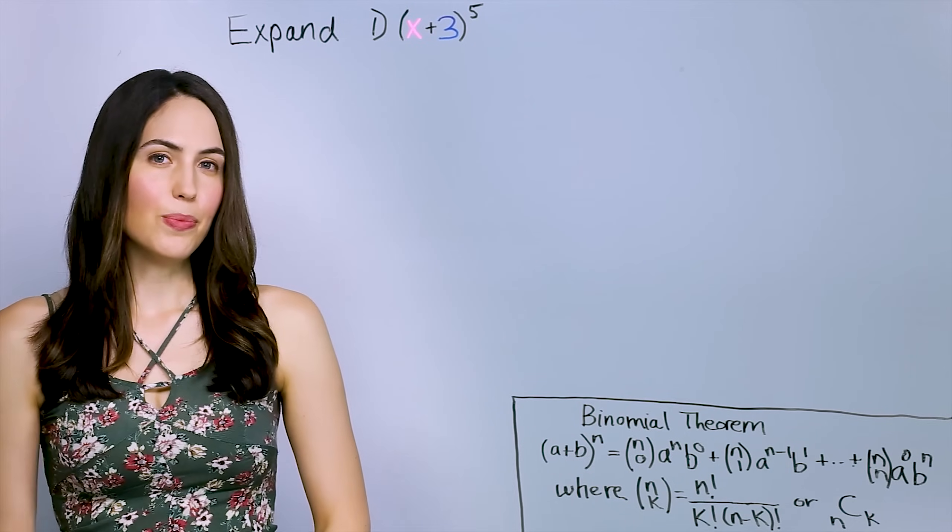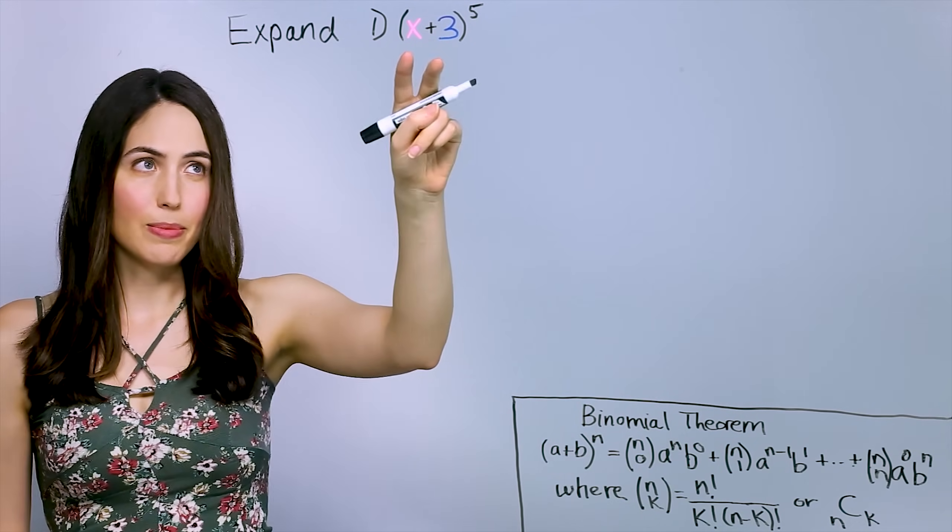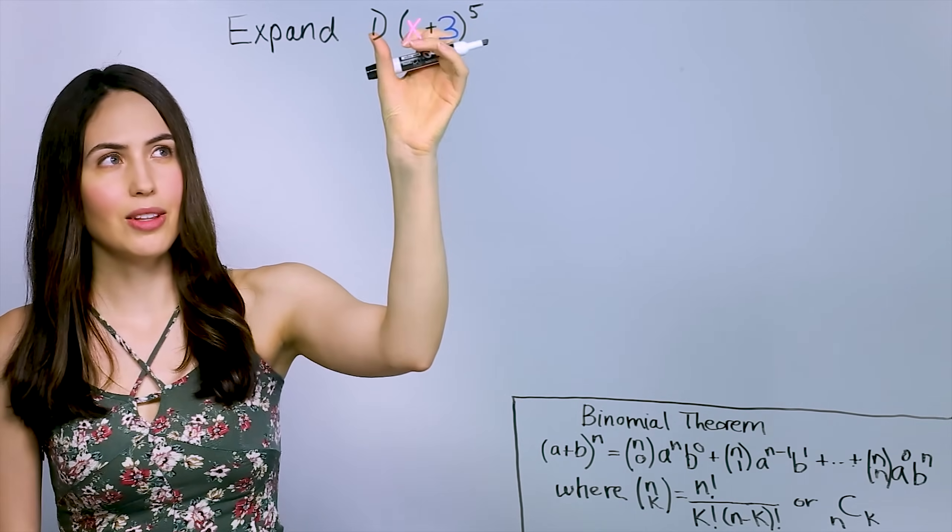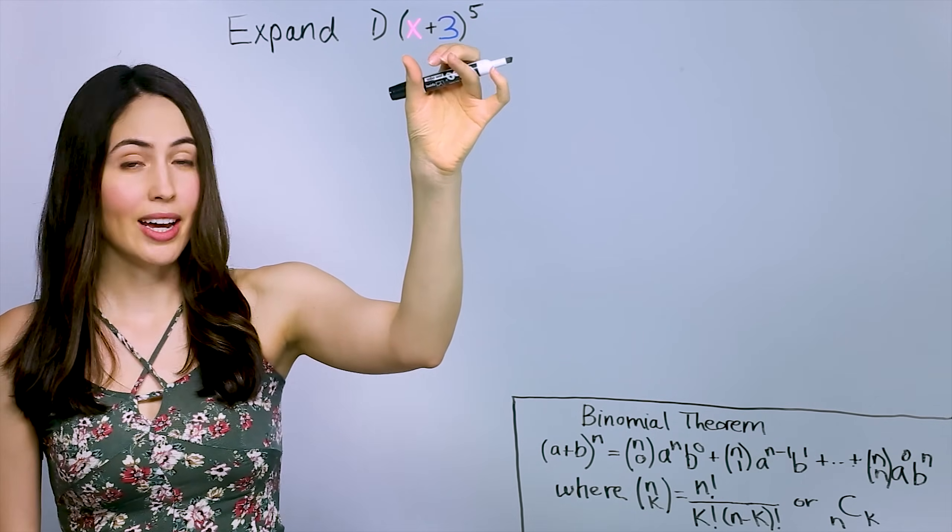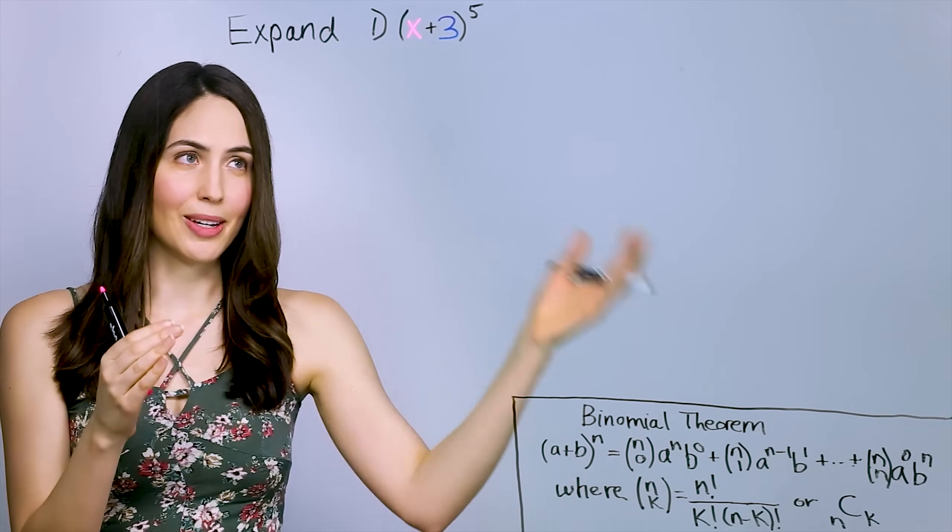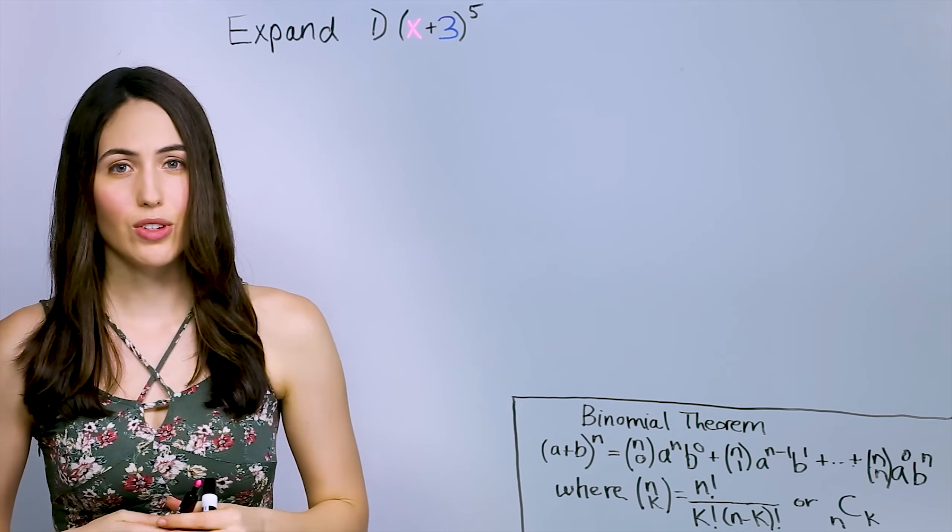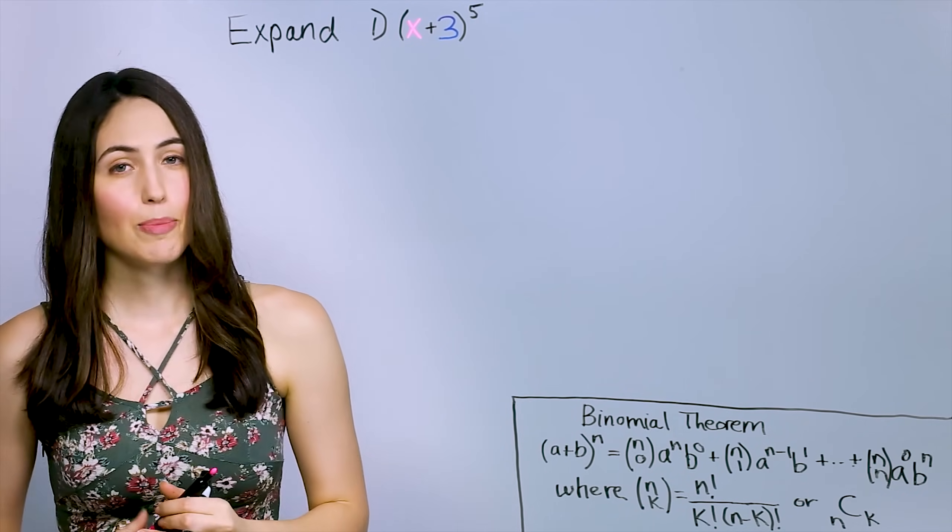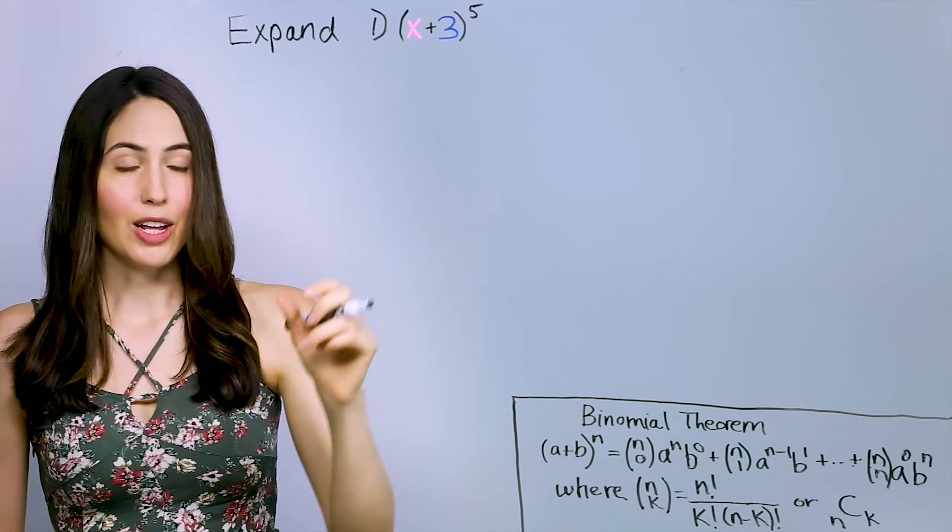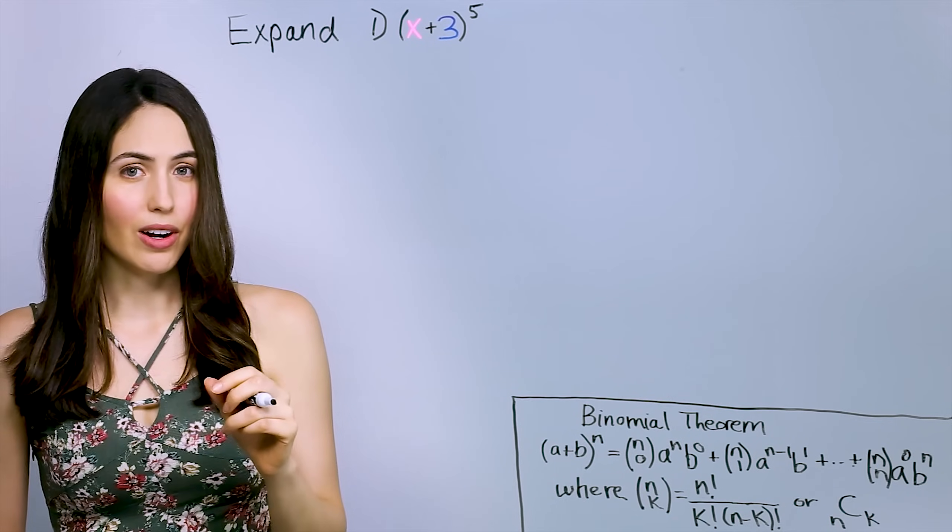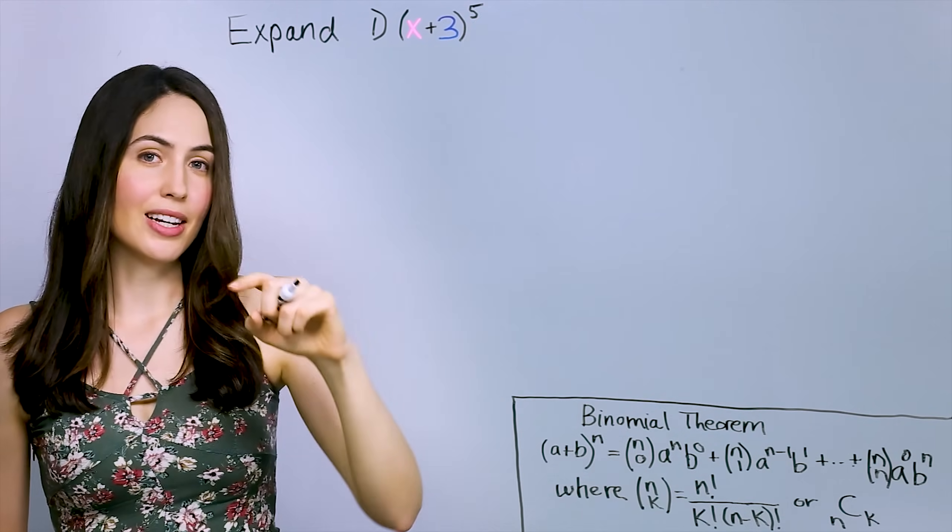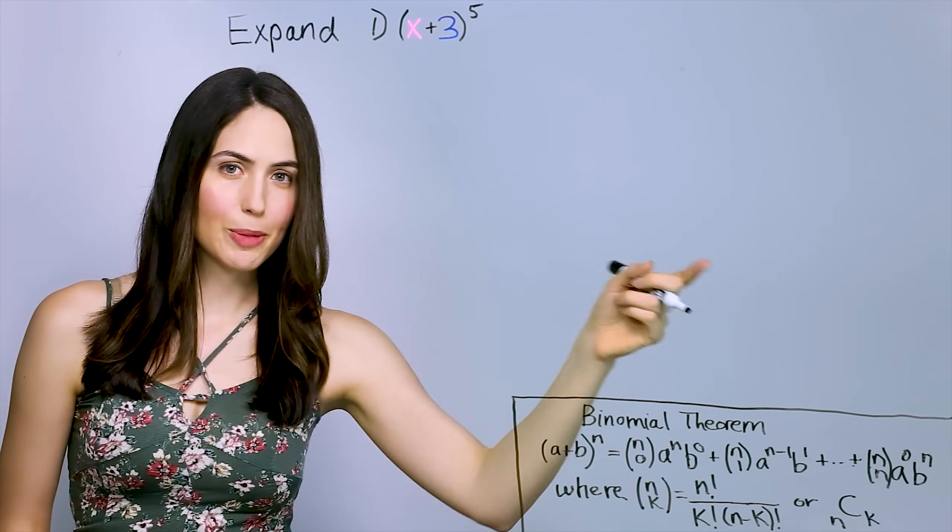So let's do the expansion. In the expansion, we have two terms, x and 3. Sometimes you'll see A and B, but ours are x and 3. And we're going to raise each of those to different powers along the way in the expansion. So let's just write those powers first so that you can see what's going on. So if we take the pattern, we take the first part, x, and it will start with a power of 5, our power number, and then go down by 1 in each term of the expansion.